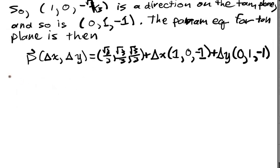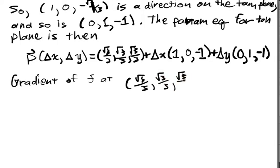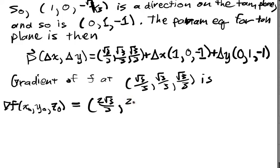So that's our tangent plane. And what's the gradient at this point? The gradient of f at this point, √3/3, √3/3, √3/3, is, and it's simple to compute because this is a very simple function. And it's 2√3/3, just coming from the exponent, 2√3/3, 2√3/3.